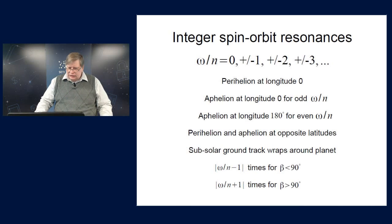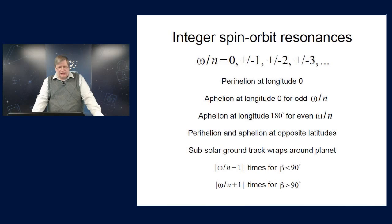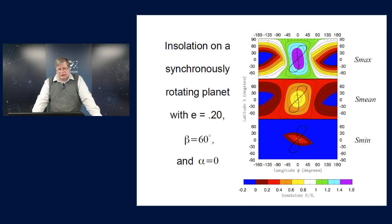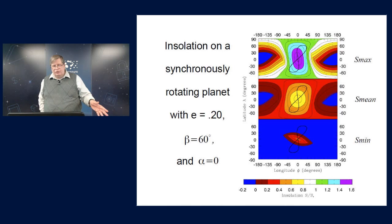So doing that, first let's look at the synchronous state where you have both eccentricity and obliquity happening at the same time. Now, from here on in, because I have to vary alpha, and three parameters is too many, I'm going to stick with an eccentricity of 0.2 and an obliquity of 60 degrees.